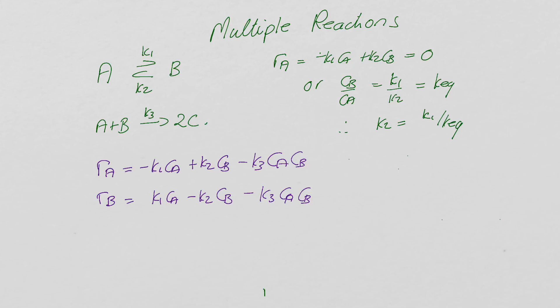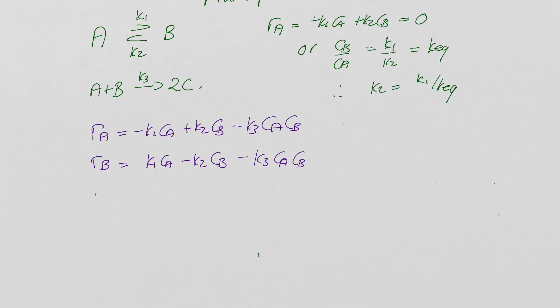Now the next question we can ask is, what would rate C be? Well, rate C is being formed in that third reaction, it's positive, it's K3, it's Ca Cb, but it's being formed twice as fast as A or B, and so it would have a 2. So that would be the rate expression when you have a system of reactions.